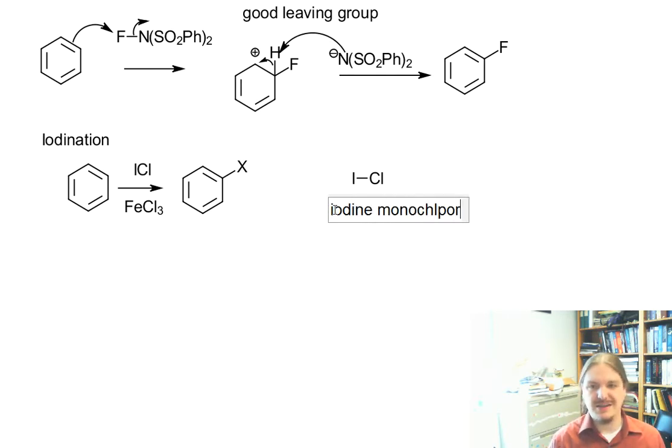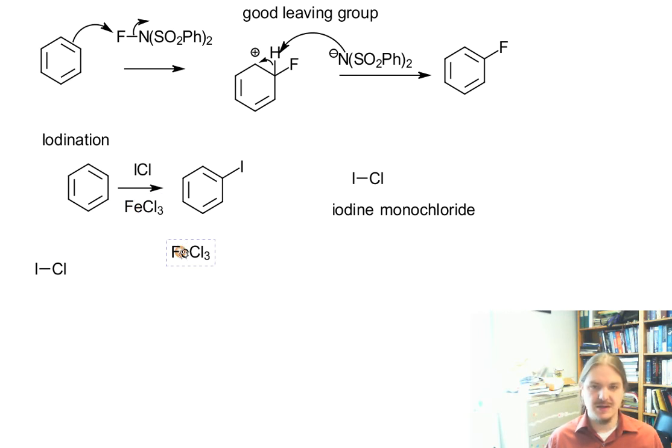Iodine monochloride is an interhalogen compound. So it's two halogen atoms, but they're not the same. And so this reaction here works because iron is much more specific or has a much stronger affinity for the chlorine than for the iodine on iodine monochloride.